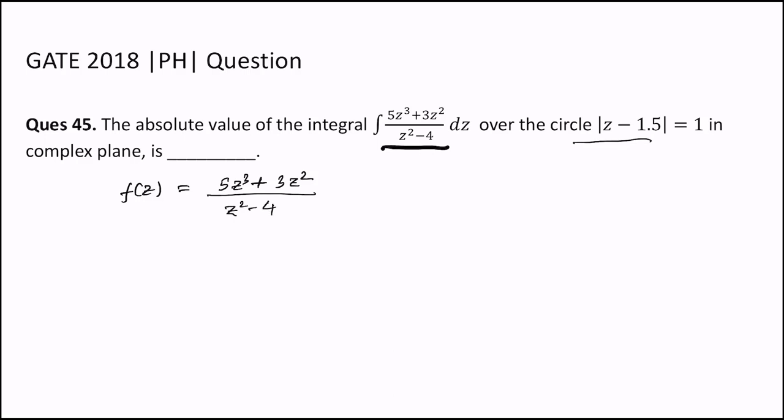In order to do this kind of integral we can first find the poles, which are found by putting the denominator equal to 0. So we have two poles at z = +2 and z = -2.